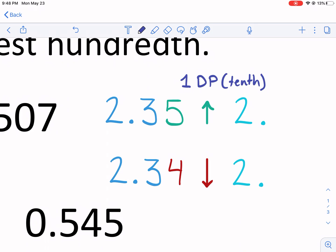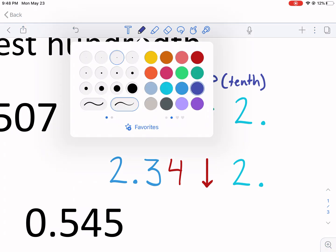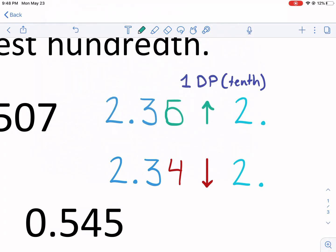So here we have two different numbers. One is 2.35. The other is 2.34. The rules are as follows. If it's a five or above, so this could be a six, this could be a seven. Whatever this number is, it could be 2.38, 2.39, any of those, you're going to round up.